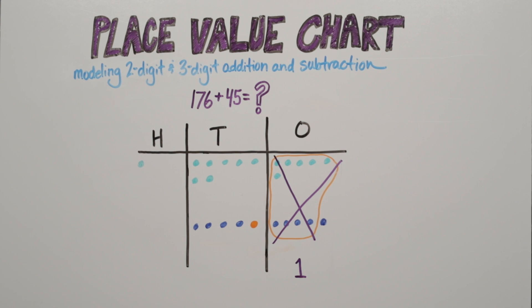Next, we add the tens. 7 tens plus 5 tens is 12 tens. So, we bundle again.